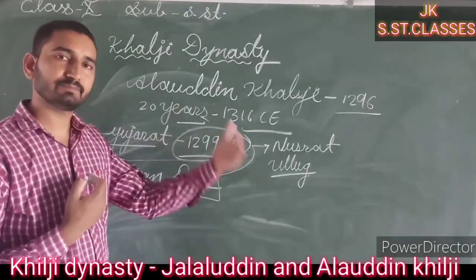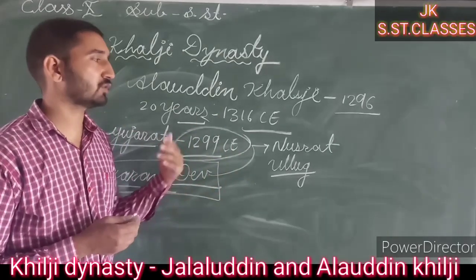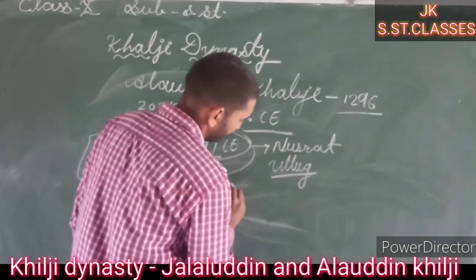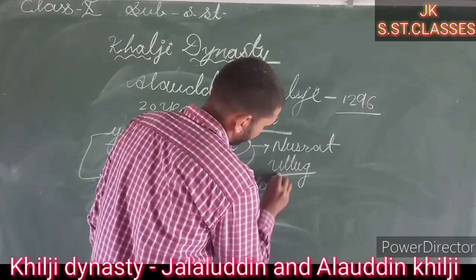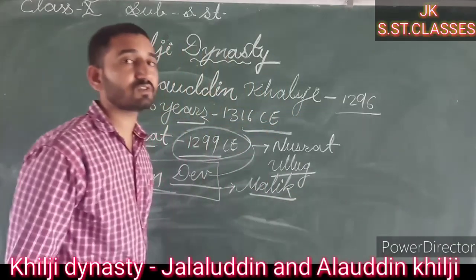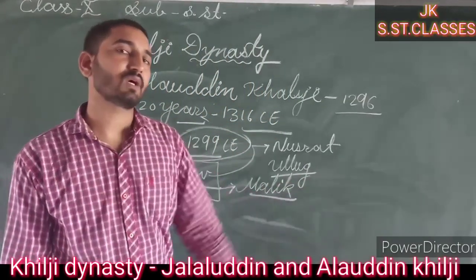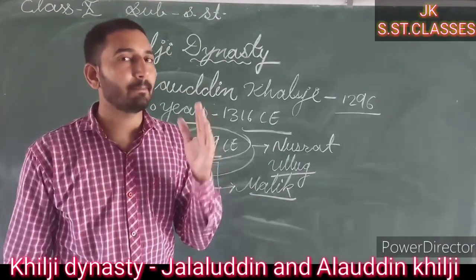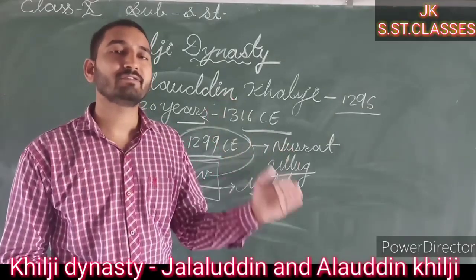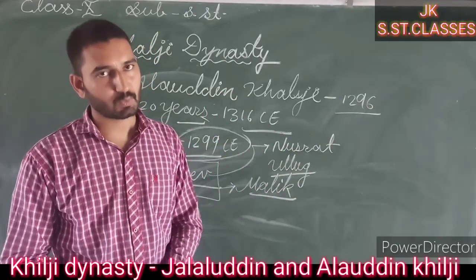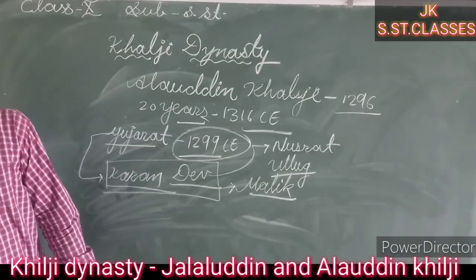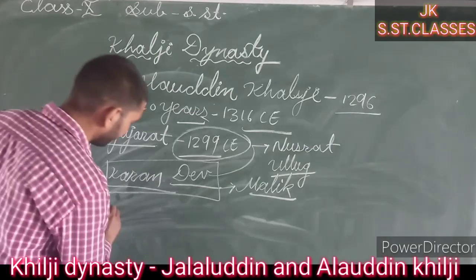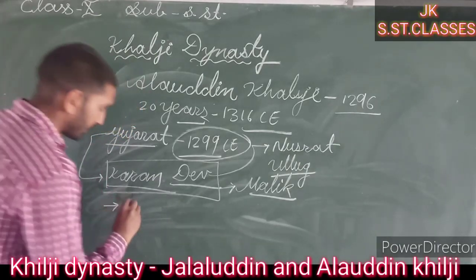At the time of the Gujarat campaign, Alauddin Khalji acquired Malik Kafur, who was the key to his success in South India. It was Malik Kafur who served as his military commander and made his entry possible into the different states of South India.